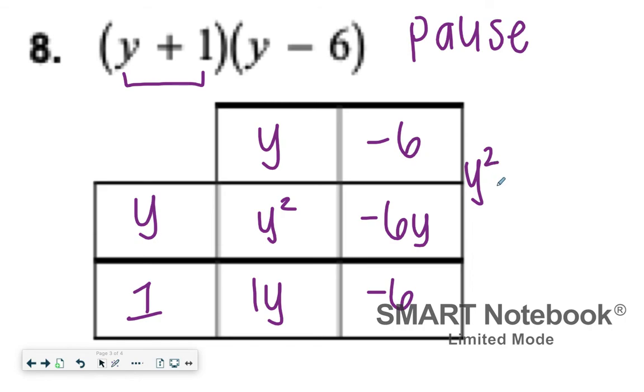And then you're combining your like terms within this set of four things. So I'll have Y squared goes by itself. And then negative six Y and positive one Y, that gives me a negative five Y. And then minus six is by itself too. So my answer for number eight is Y squared minus five Y minus six.